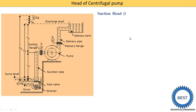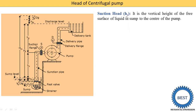What is the suction head? Suction head is denoted as HS — H means head and S stands for suction. It is the vertical height from the free surface of liquid in the sump to the center of the pump. This height is measured in meters and is denoted as HS.